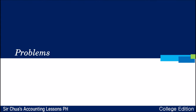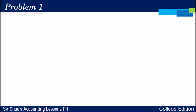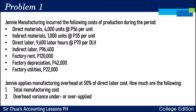That's our theory discussion. Let's proceed to problems to better understand the concepts. Problem number one: Jenny Manufacturing incurred the following costs of production during the period — direct materials, indirect materials, direct labor with labor hours, and actual overhead items including indirect labor, rent, depreciation, and utilities. Jenny applies manufacturing overhead at 50% of direct labor cost. We are to compute the total manufacturing cost and the overhead variance, under or over-applied.